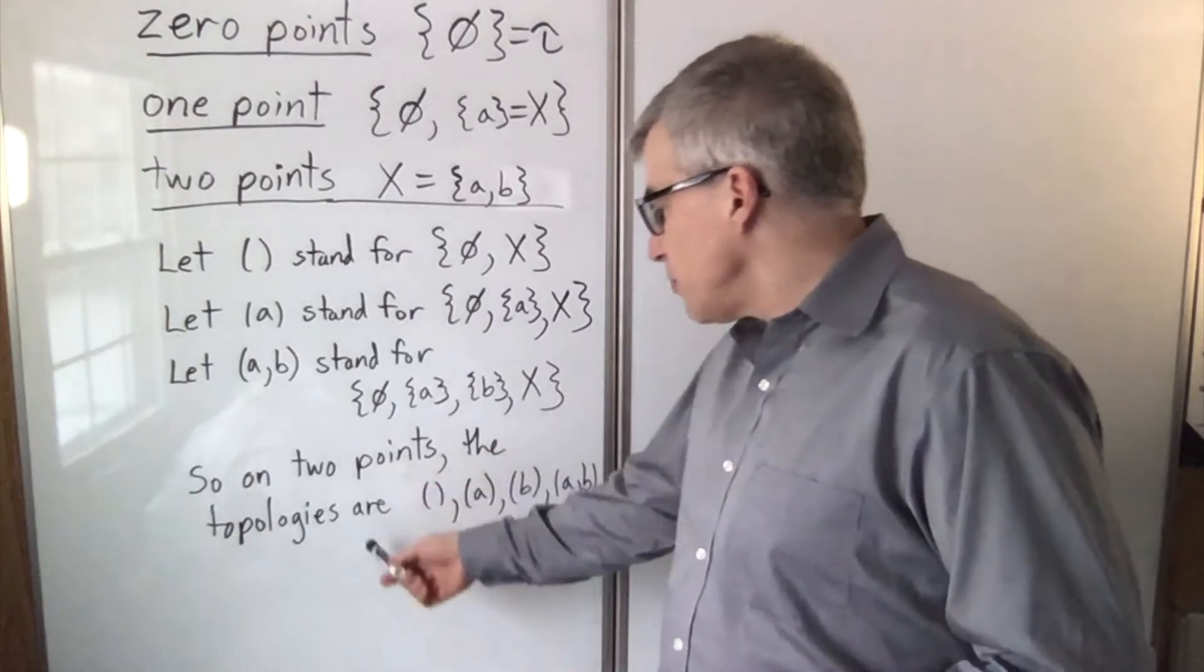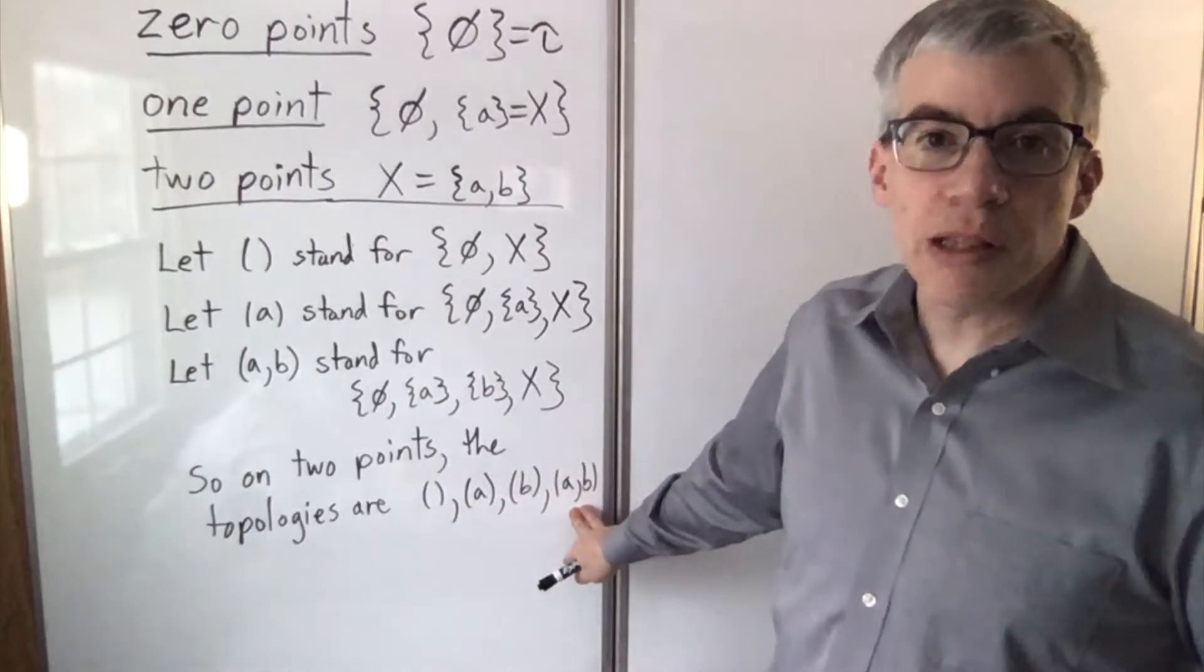So on two points, the topologies are this, this, this, and this, and that's a lot shorter.